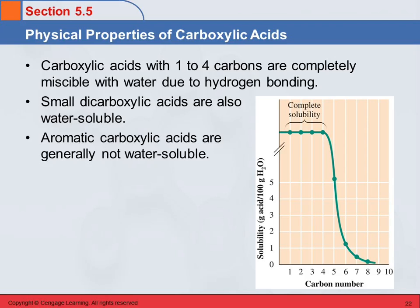Because of the polarity and the hydrogen bonding, carboxylic acids — the small ones — are going to be completely miscible with water. Miscibility means that they can dissolve in each other in any proportion. You can have a little bit of carboxylic acid and a lot of water, or a lot of carboxylic acid and a little bit of water — any proportion. That's what completely miscible means. We see that the miscibility is complete for the first four carbons, and after that the solubility drops off sharply.